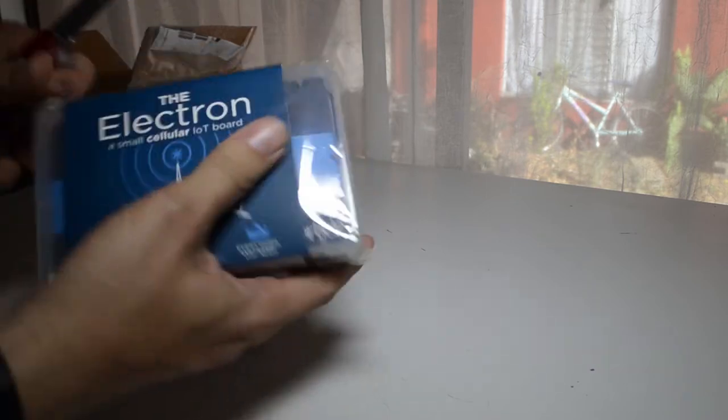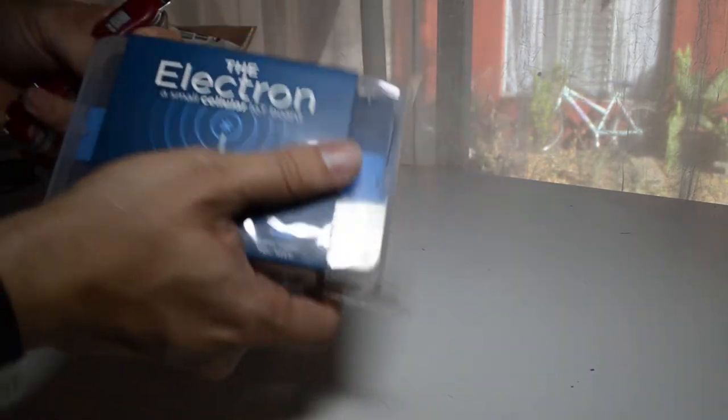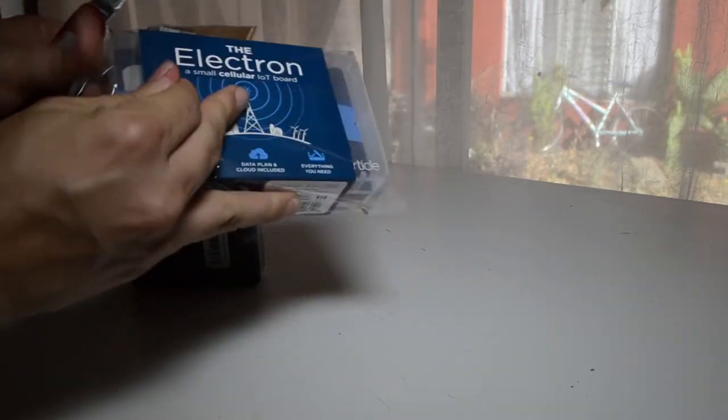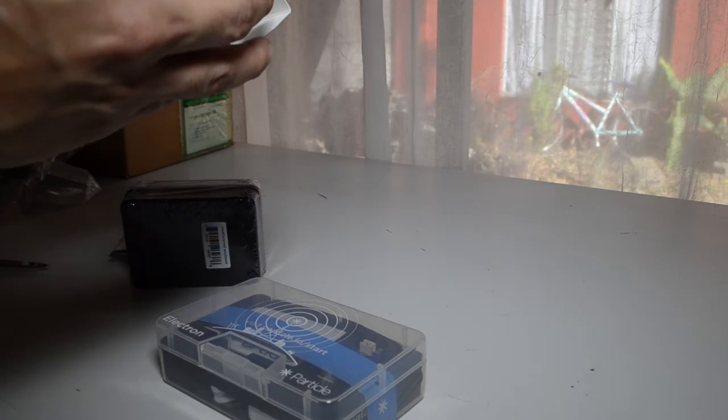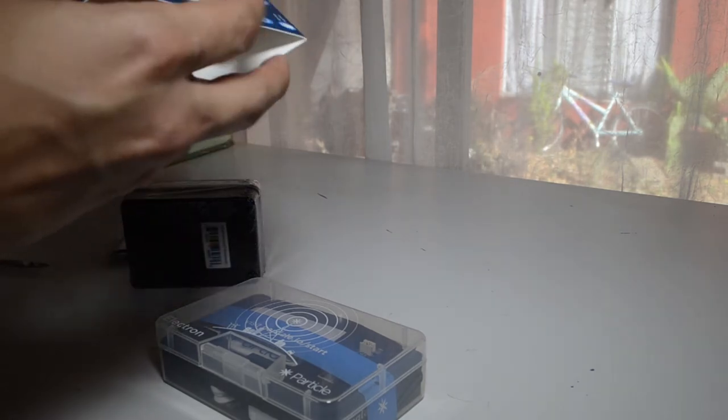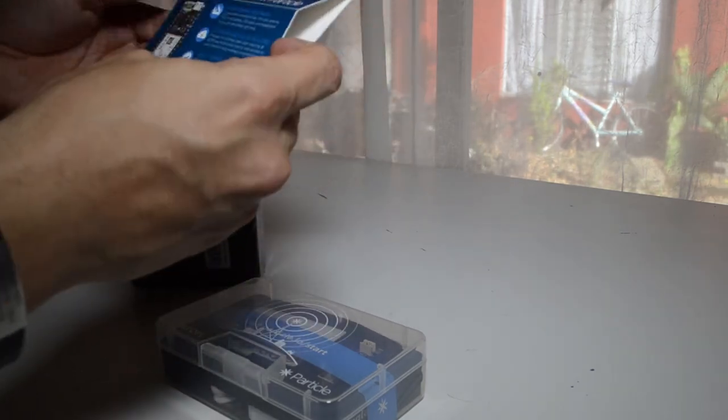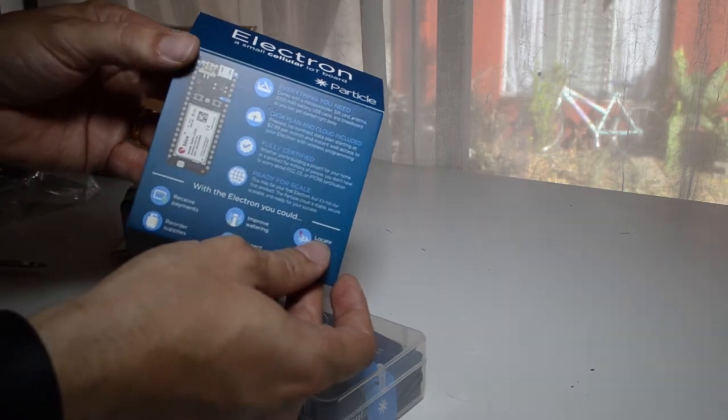And finally, the so much awaited Electron board for the internet of things. Let's see if I can open here, hopefully it doesn't contain any of the track switch devices, but basically this is the box.